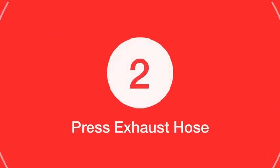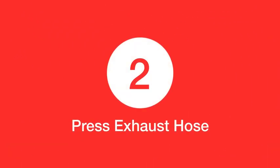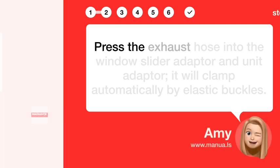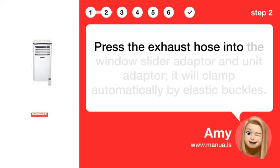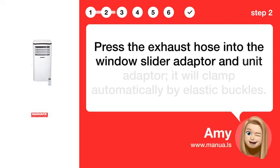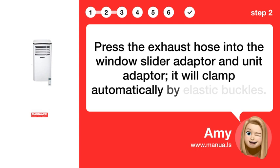Step 2: Press exhaust hose A. Press the exhaust hose into the window slider adapter and unit adapter. It will clamp automatically by elastic buckles.